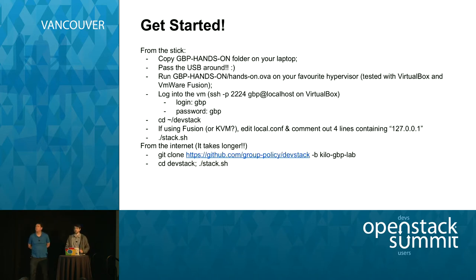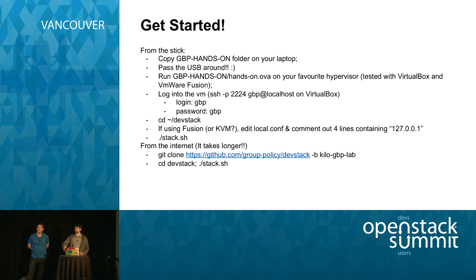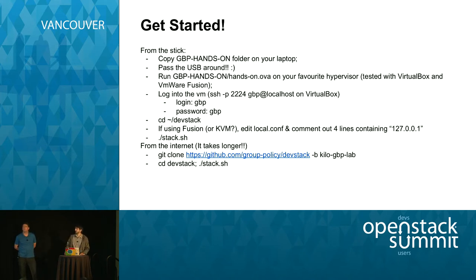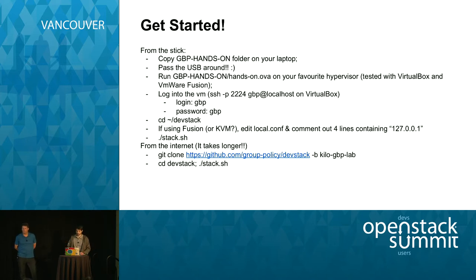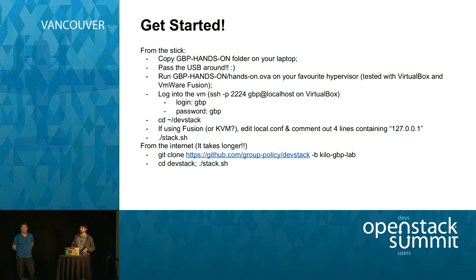Welcome to the Group Based Policy Lab. If you have a free USB stick, you can pass them down for the installation. Many of you already copied the files, but let's go through it again. You will be provided a USB stick with a GBP hands-on folder. Copy that on your local system. You'll find an OVA in this folder that you can use with VirtualBox or VMware Fusion, or any other hypervisor. There is also a special USB stick with a QCOW2 disk for KVM - just let me know if you need that.